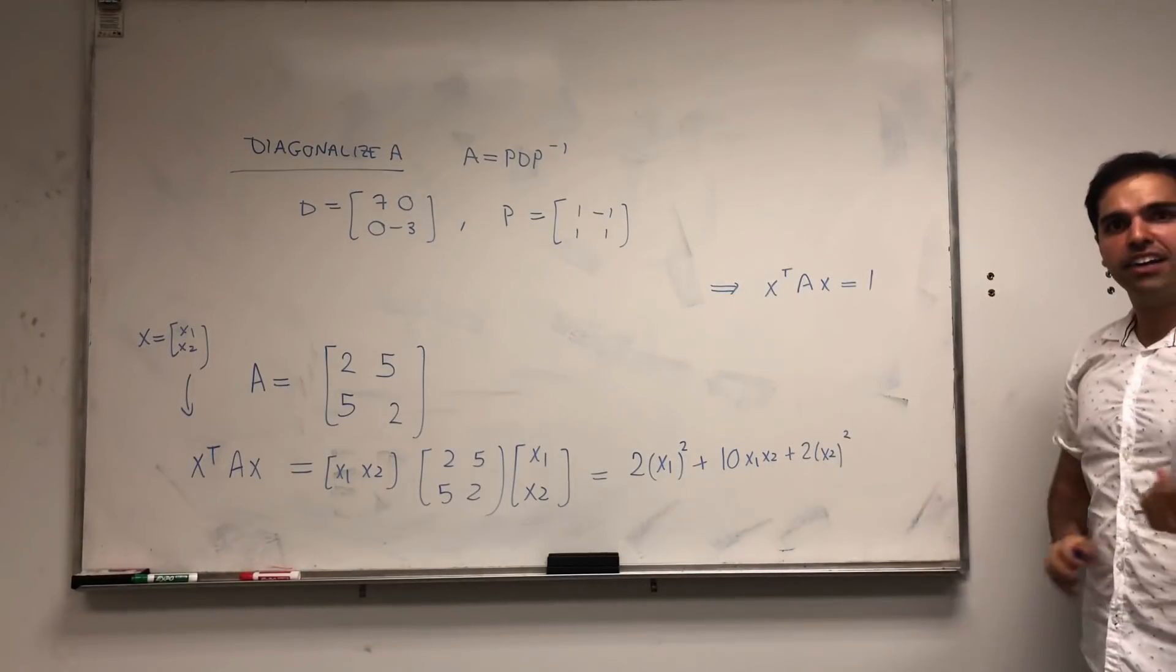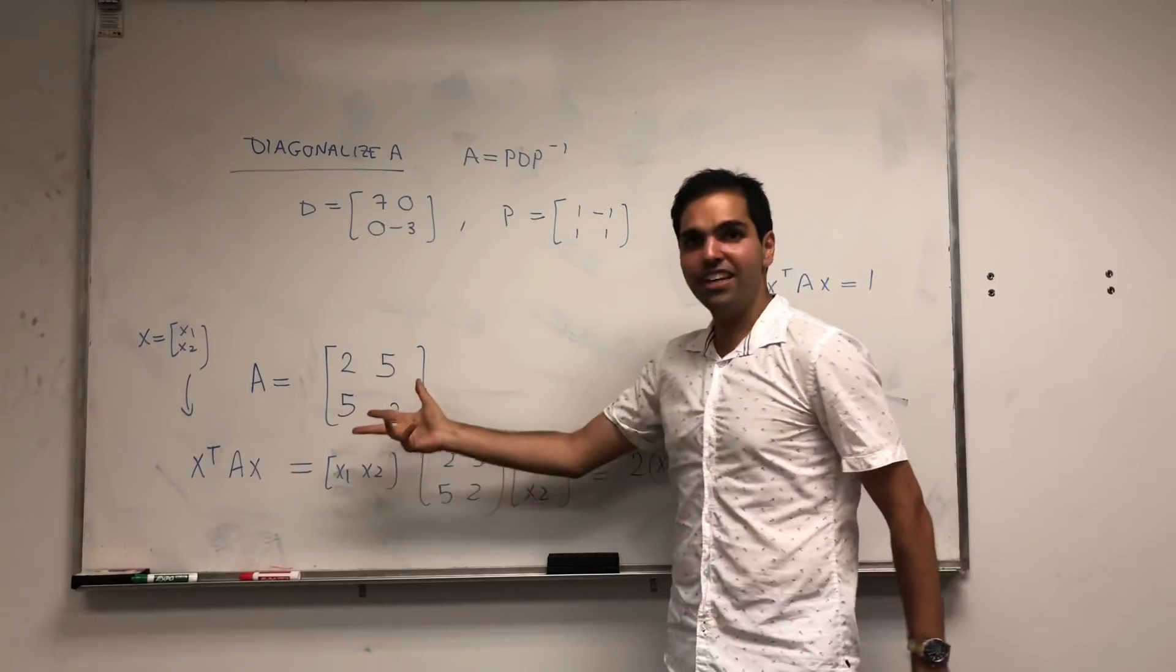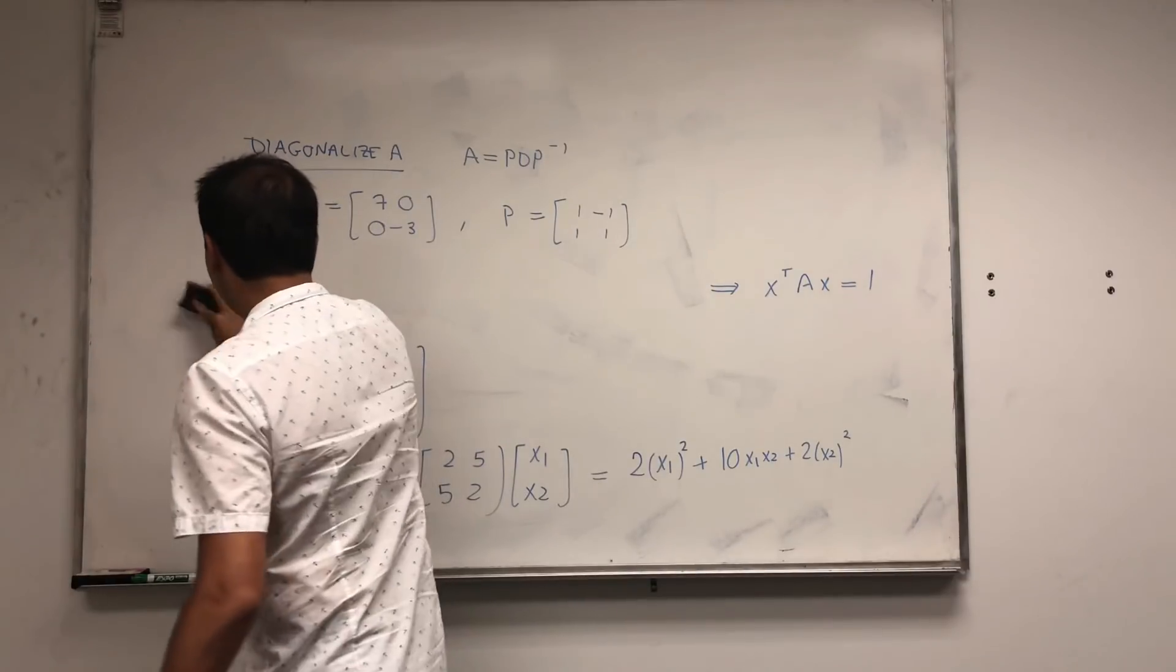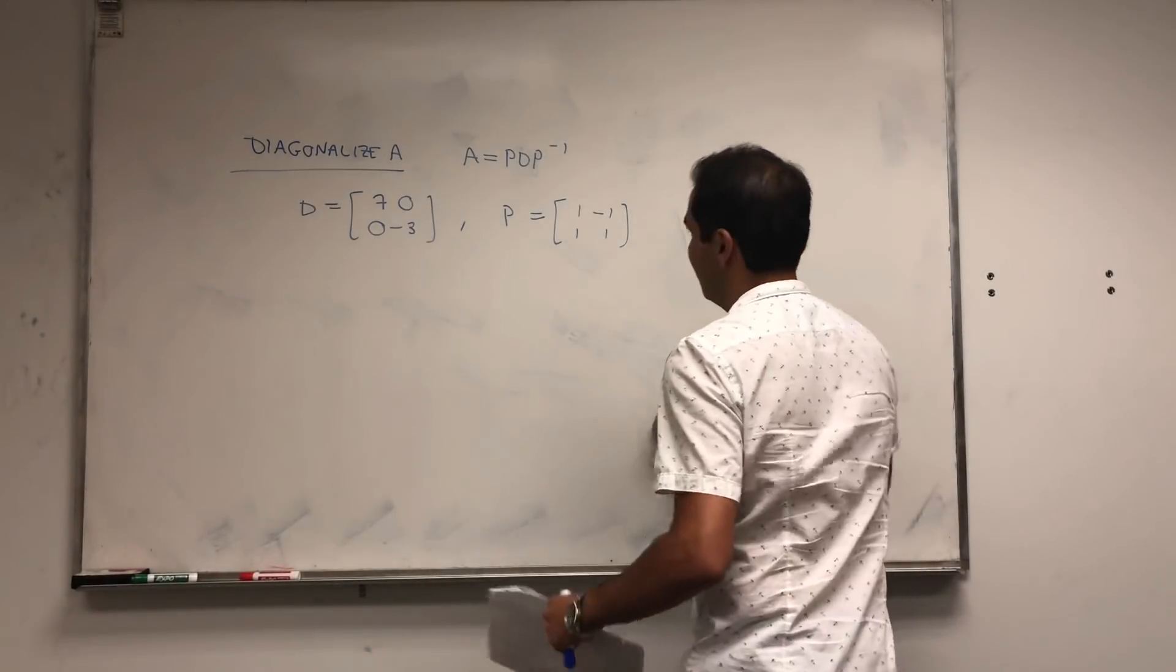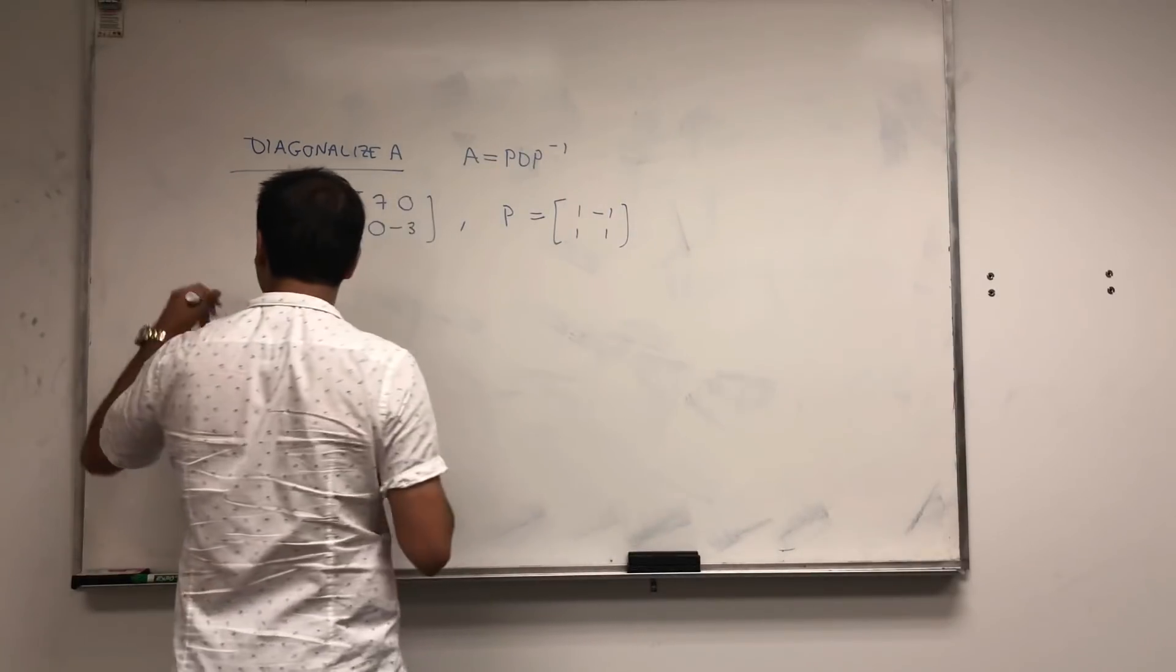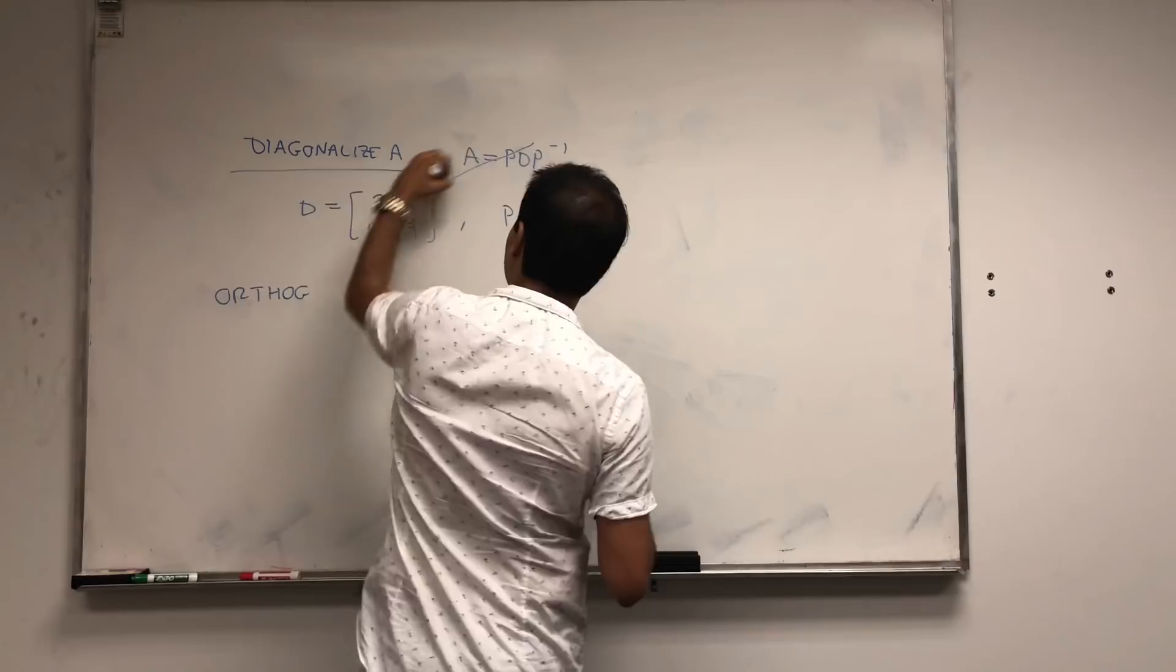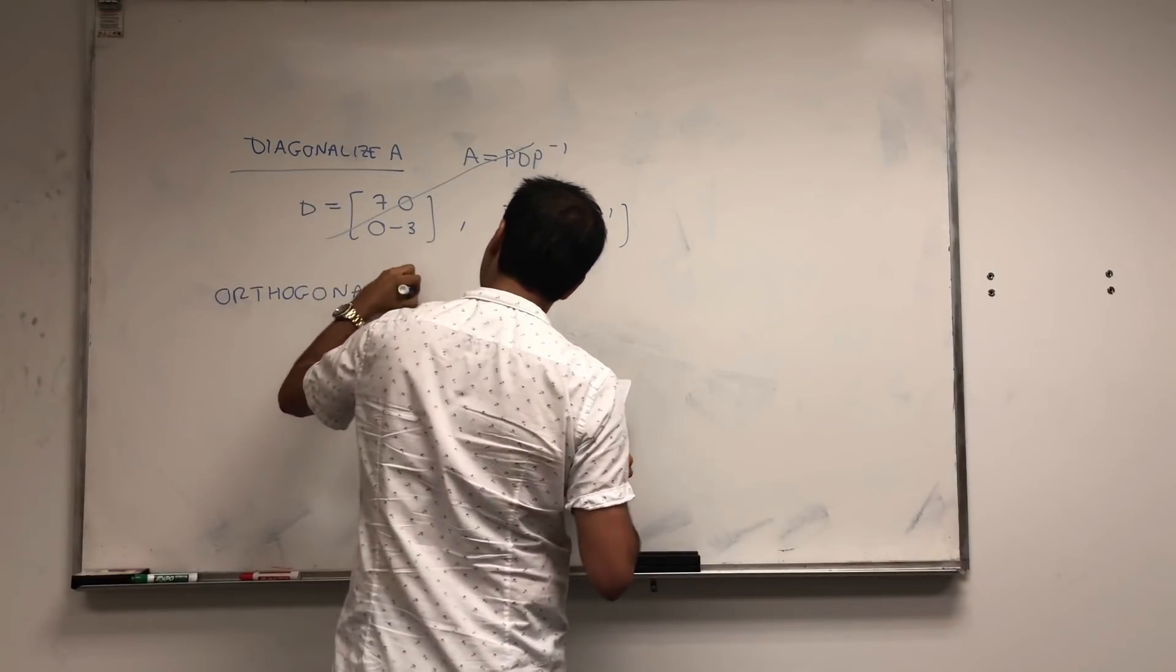But that works for any diagonalizable matrix. It turns out for symmetric matrices, you can do more than that. Namely, you can orthogonally diagonalize this. And I'll tell you in a second what this means. So orthogonally diagonalize A.